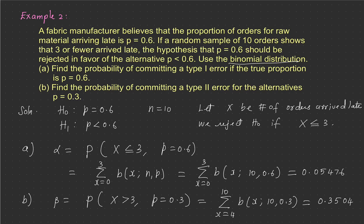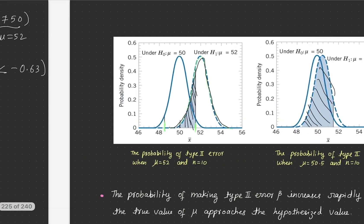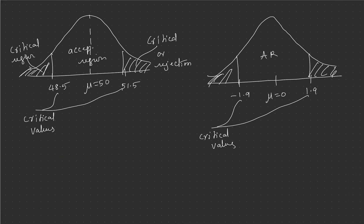Alpha error is very important and is also called the level of significance. It is the area covered by the critical region — if the area covered by the critical region decreases, alpha also decreases, and in that case the acceptance region increases. In the next session we will see how fixing the level of significance allows us to find the critical region and acceptance region, and how the acceptance region is connected with the confidence interval.